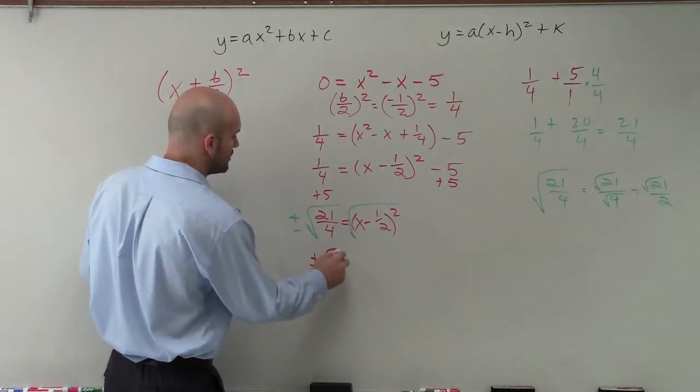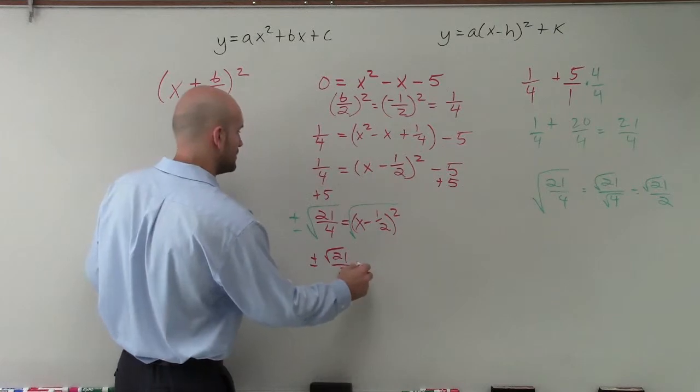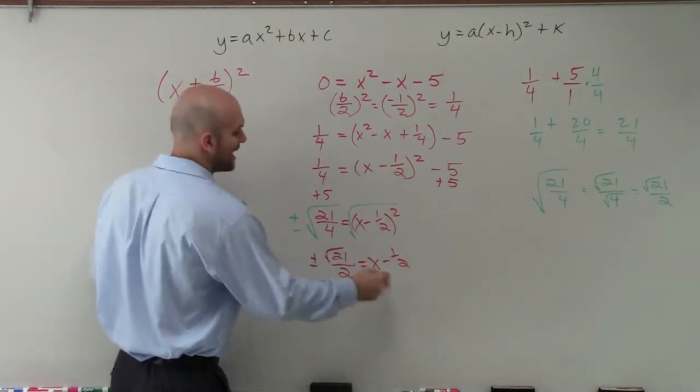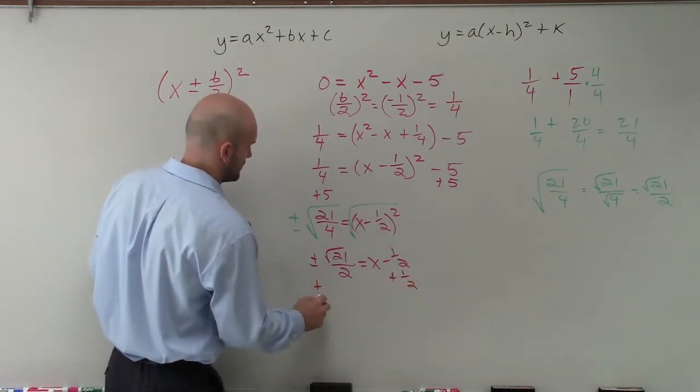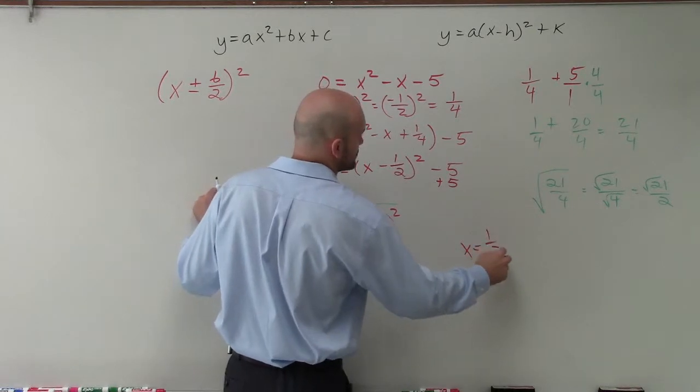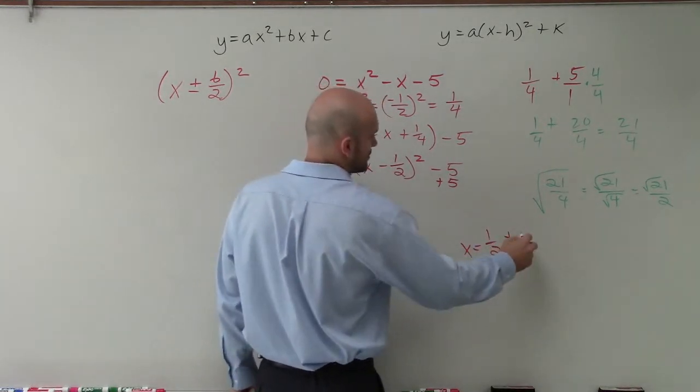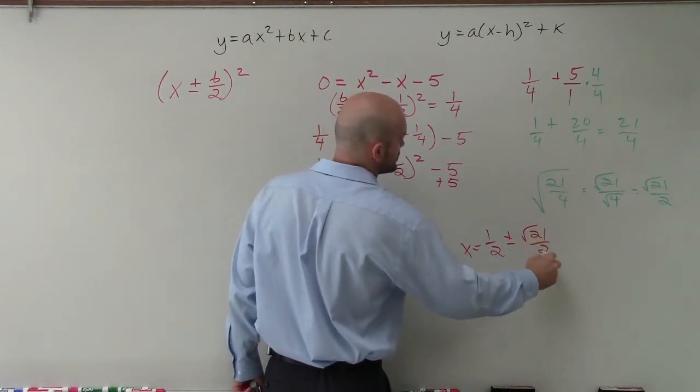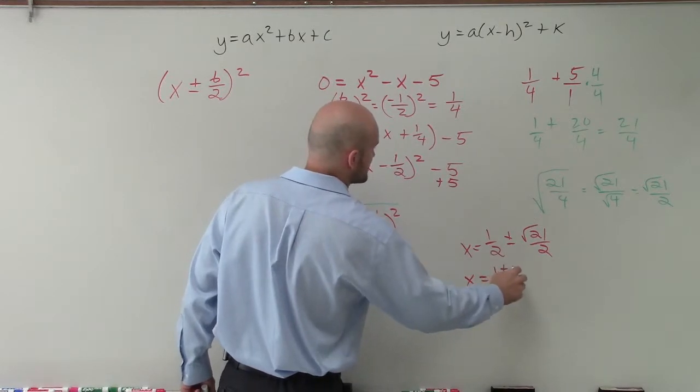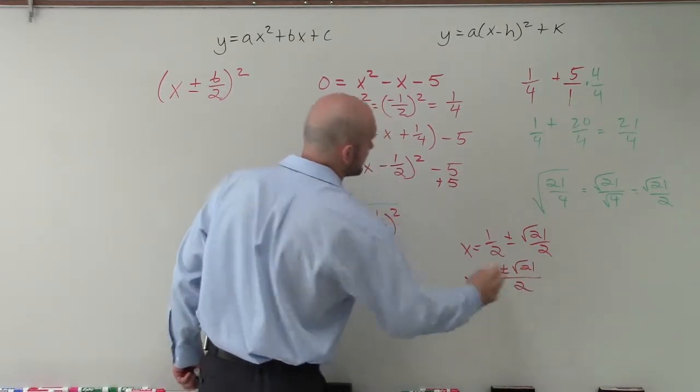However, we will have plus or minus the square root of 21 over the square root of 4, which is 2, equals x minus 1 half. Now I add the 1 half to the other side. And therefore, my final answer is going to be x equals 1 half plus or minus the square root of 21 over 2. And then we can combine these into one single quantity, as represented x equals 1 plus or minus the square root of 21 over 2.